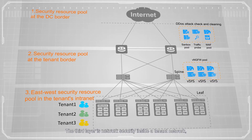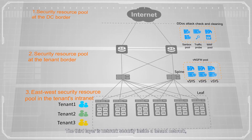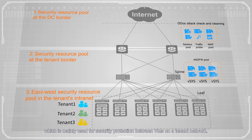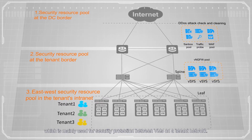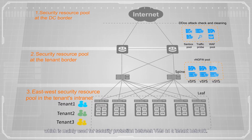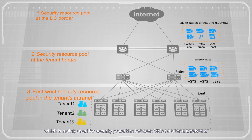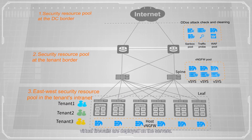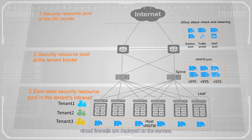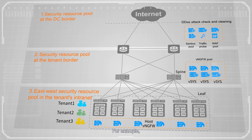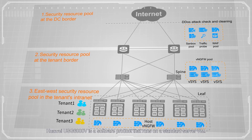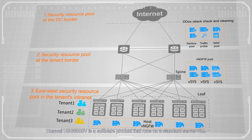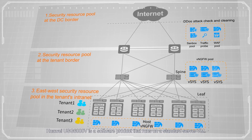The third layer is network security inside a tenant network, which is mainly used for security protection between VMs on a tenant network. Generally, virtual firewalls are deployed on the servers. For example, Huawei USG 6000v is a software product that runs on a standard server VM.